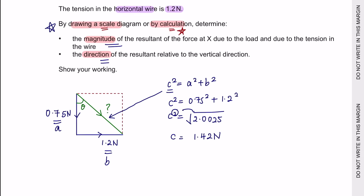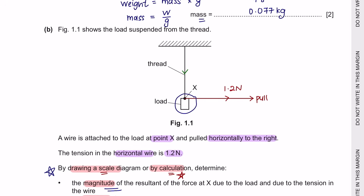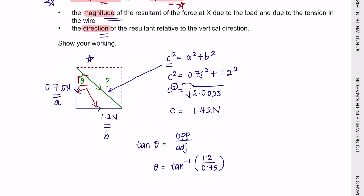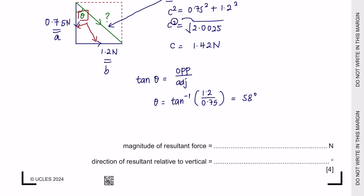Next, we find the direction. Since the load is pulled to the right, we use trigonometry. The angle θ is found using tan θ = opposite/adjacent = 1.2/0.75, giving 57.99°, which rounds to 58°. So the magnitude to two significant figures is 1.4 N and the direction of the resultant force is 58°.